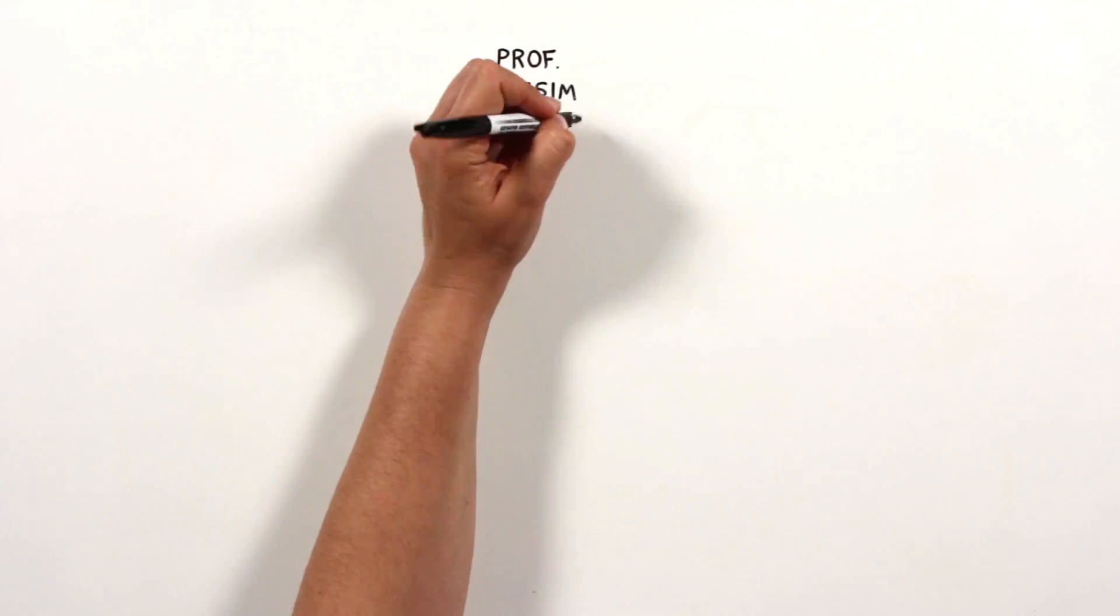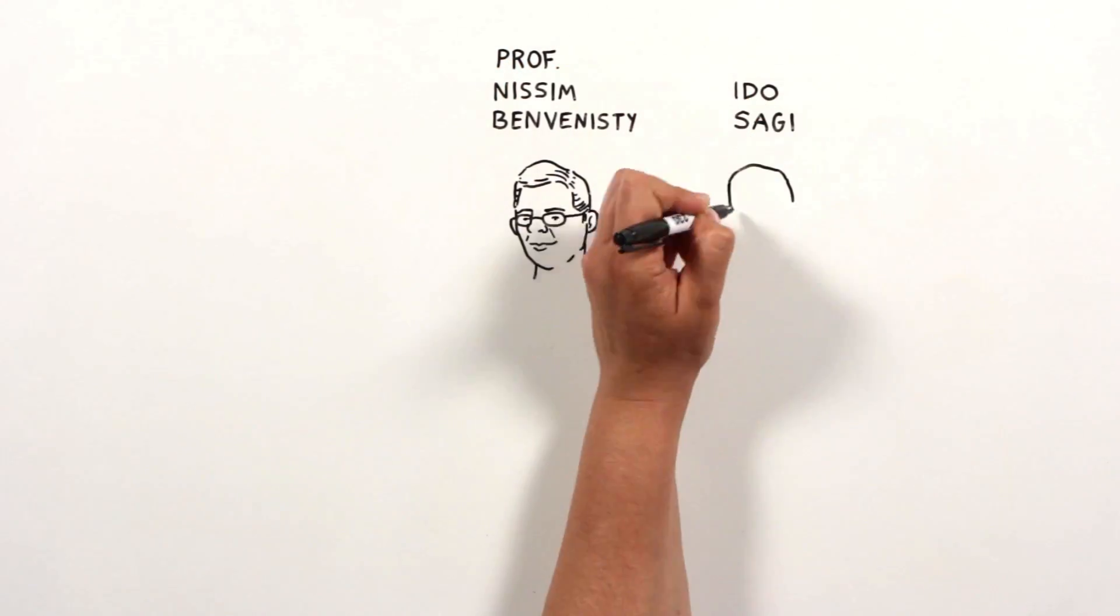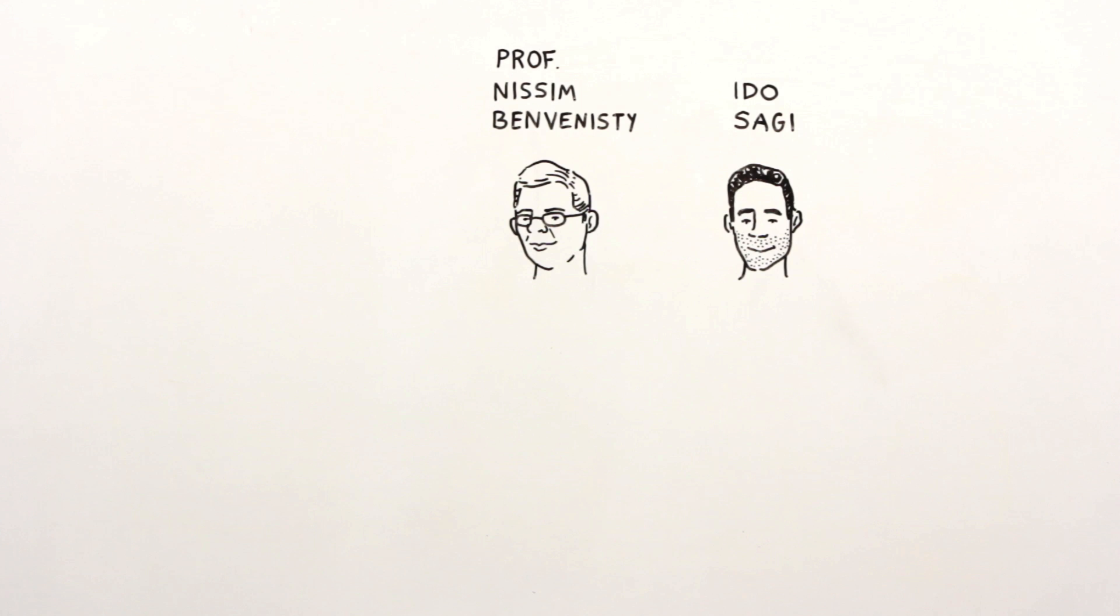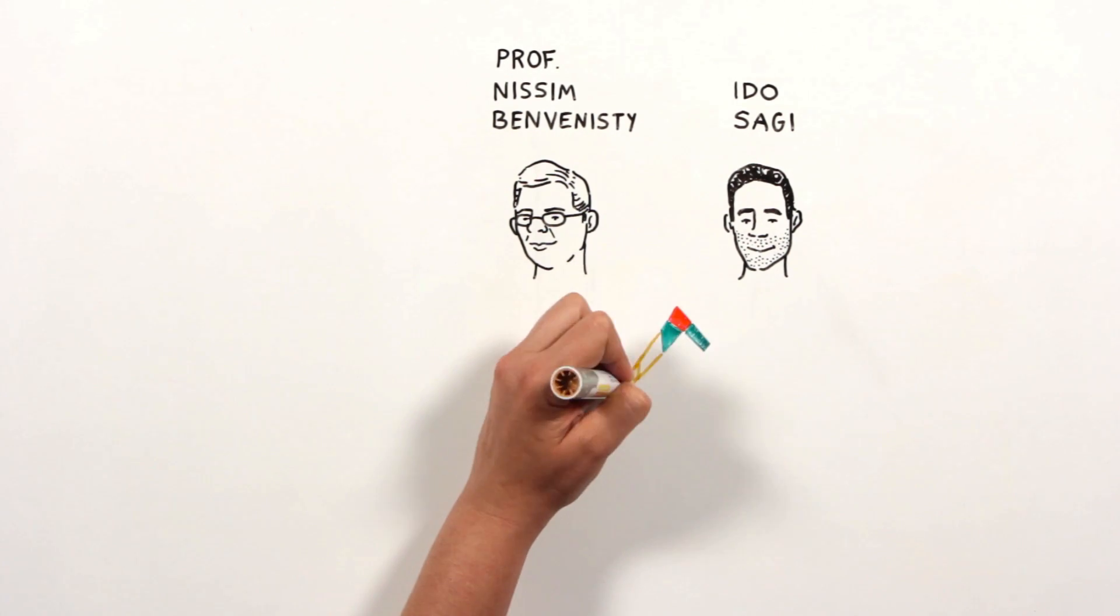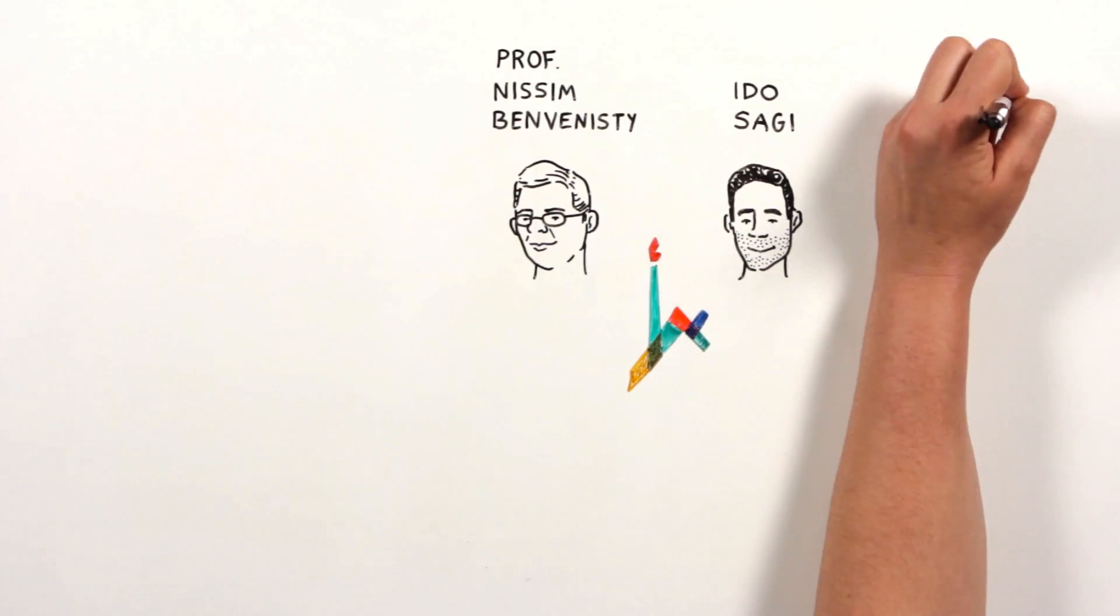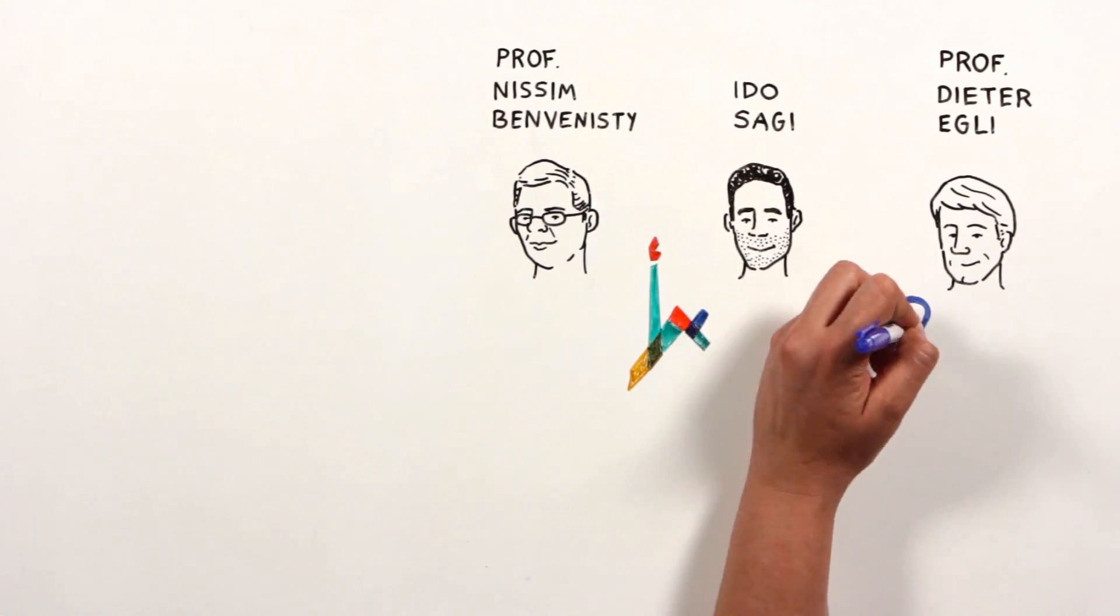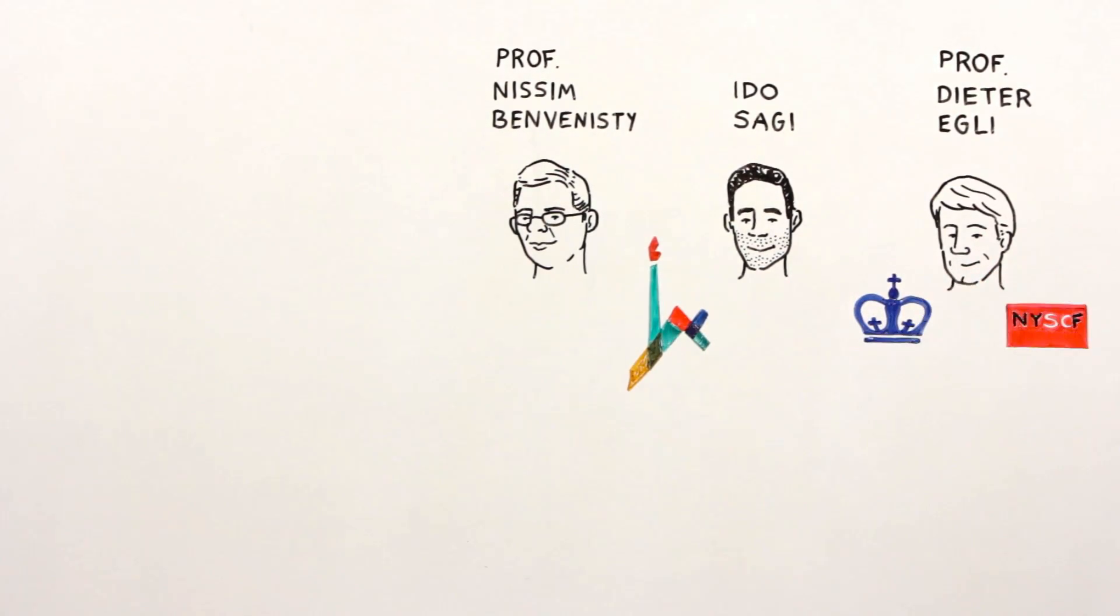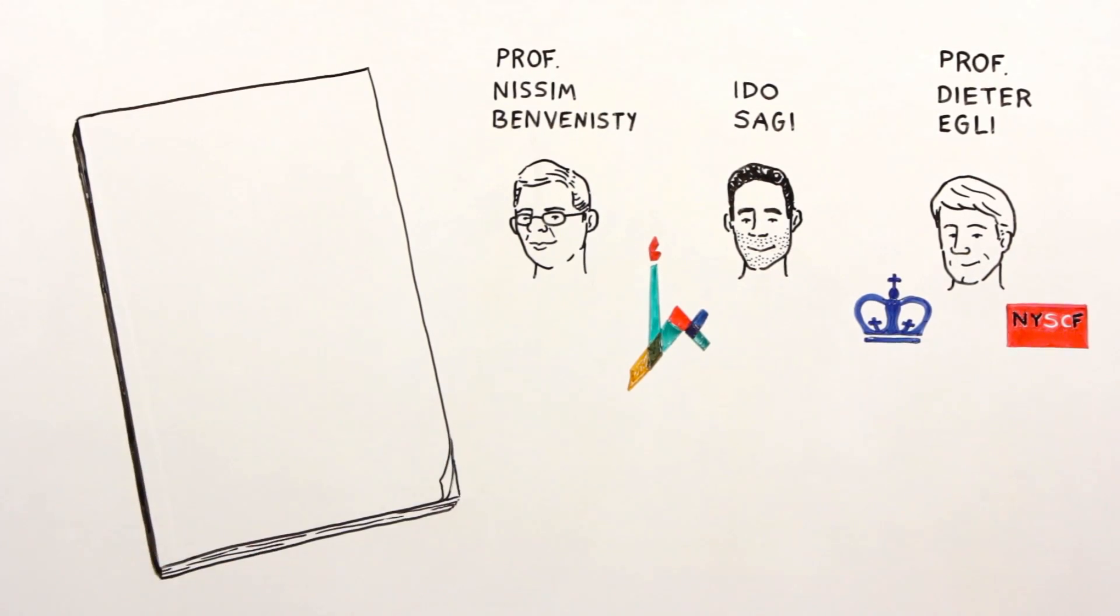Professor Nisim Benvenisty and Ido Sagi from the Azrieli Center for Stem Cells and Genetic Research at the Hebrew University of Jerusalem and Professor Dieter Egli from Columbia University and the New York Stem Cell Foundation succeeded in generating a new type of stem cell that carries only 23 chromosomes.